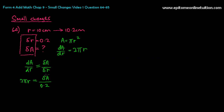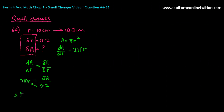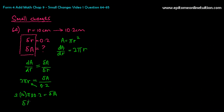Now you have an equation: 2 pi R equals delta A divided by 0.2, and you're solving for delta A. You put in the original value of R, which is 10, not 10.2 — because the 0.2 is already accounted for in delta R. So that's 2 times 10 times pi times 0.2. The small change in area is 20 pi times 0.2, which equals 4 pi centimeters squared.